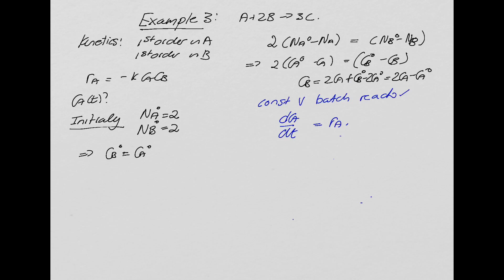So continuing, we have our rate expression, which was minus K Ca times Cb, which is now 2 Ca minus Ca0. So what has really changed by us changing our feed conditions or initial condition, what we fed into the reactor, is this expression. It looks a little bit different. How do we go about solving that?